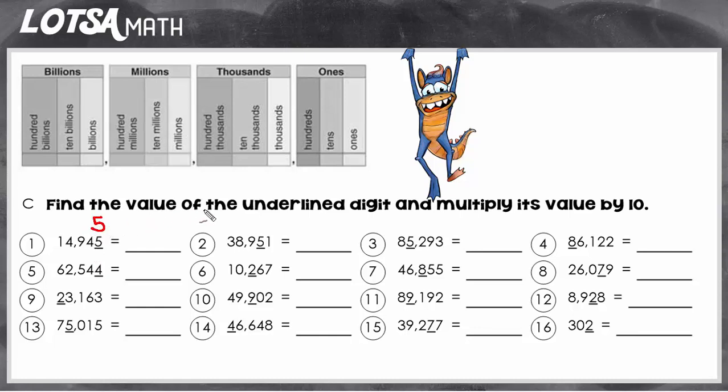So we're going to find the value of the digit, and then we're going to multiply its value by 10. So we're going to take 5 and multiply it by 10. So 5 times 10 is 50.